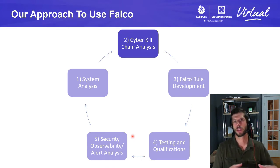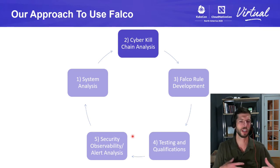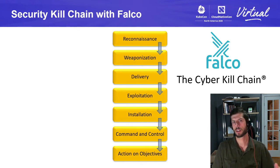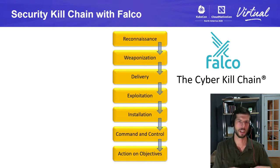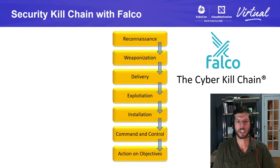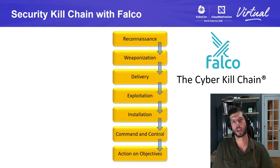After we understand our system, we can map it to a cybersecurity kill chain to analyze where our potential security risks are. We've mapped to the Lockheed Martin cybersecurity kill chain, which has seven stages. We'll go through all of these starting from reconnaissance — the common pattern an attacker would use to compromise a system. They might not go through every phase, but they'll ultimately start at reconnaissance, fingerprinting the system, looking at the operating system, open ports, and running services, then move toward delivering an exploit, exploiting the system, and potentially installing malware.